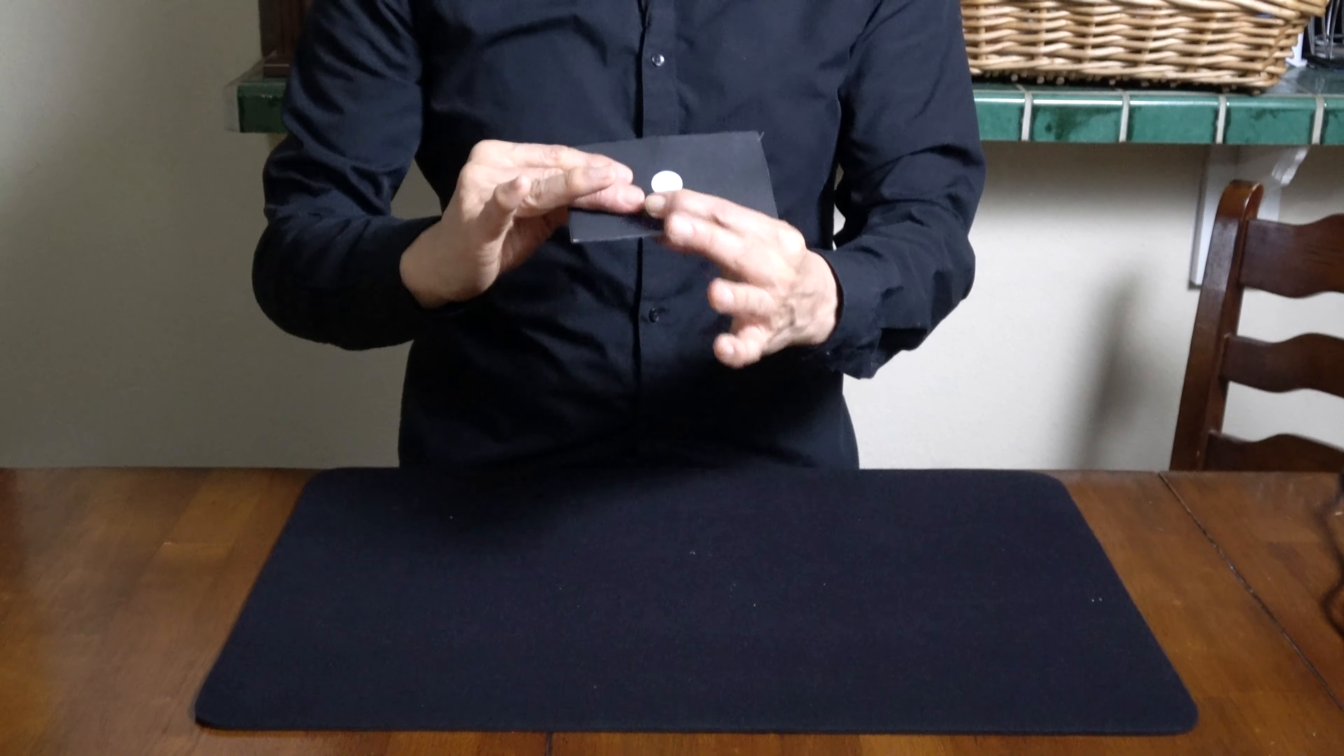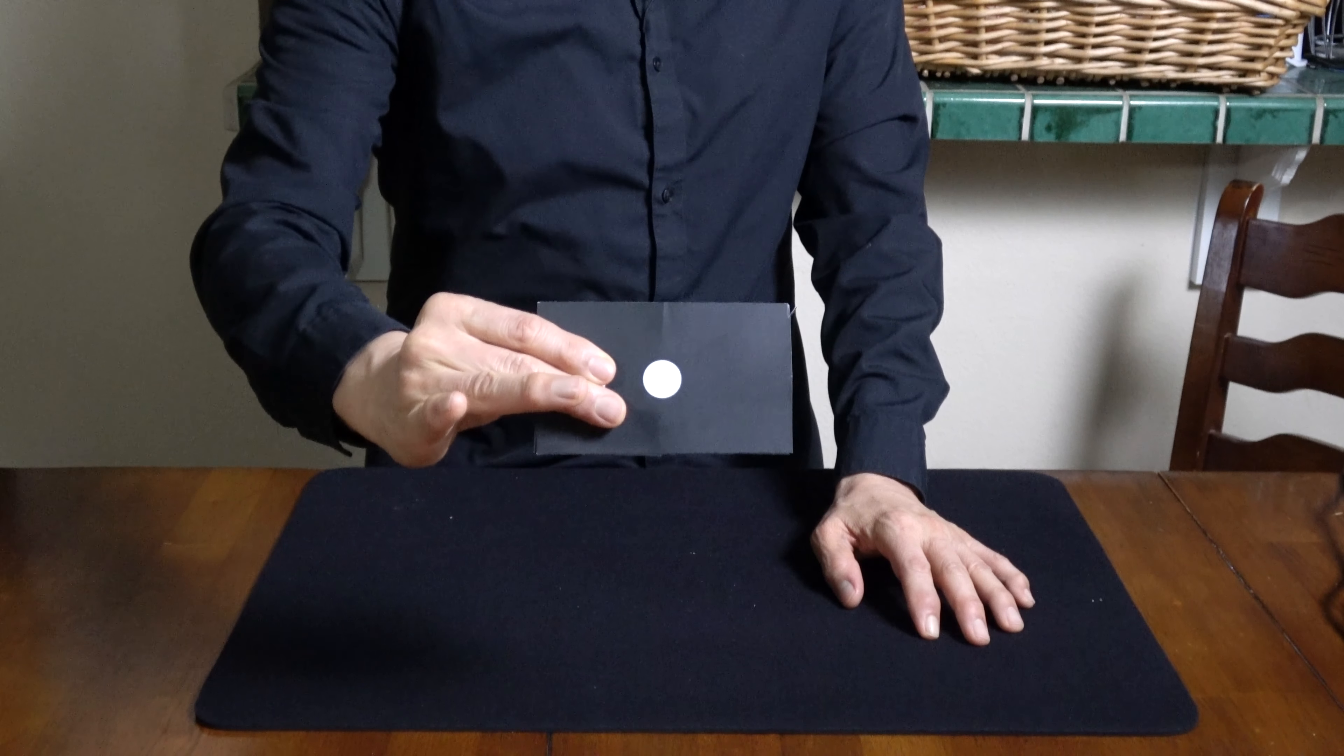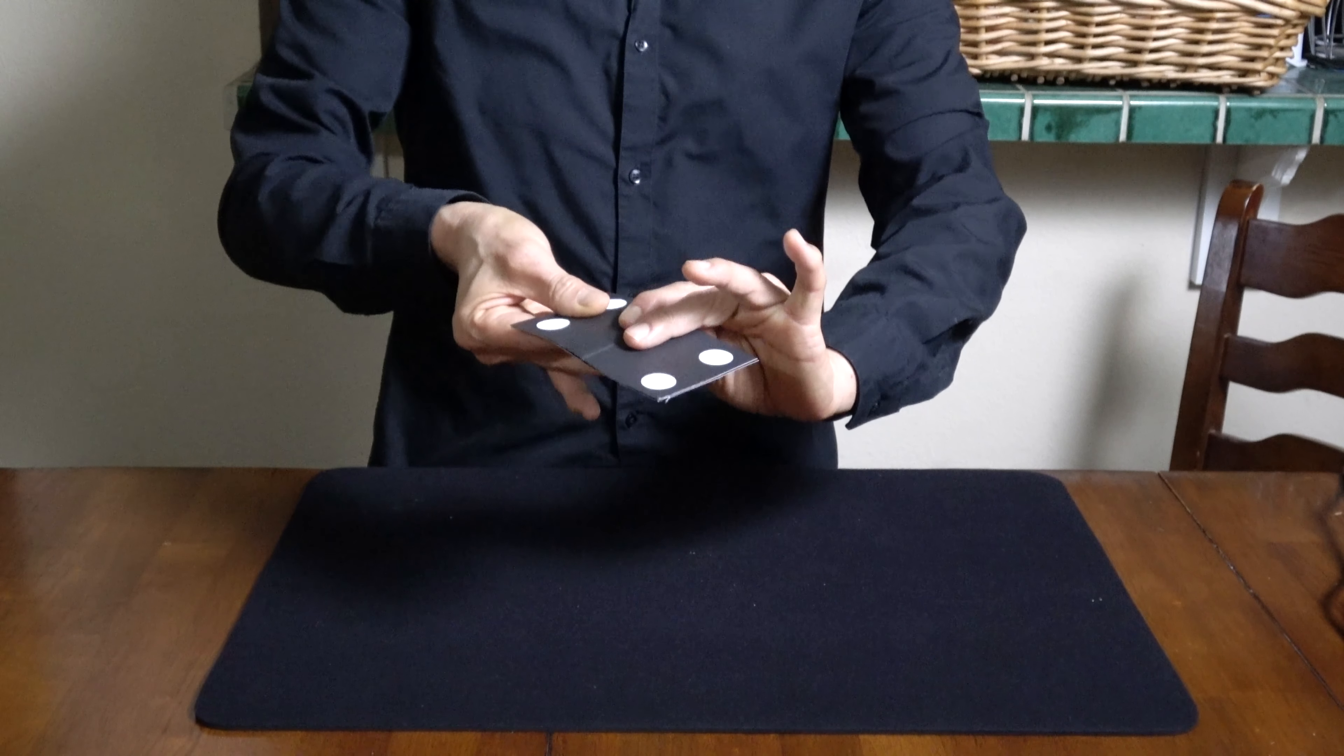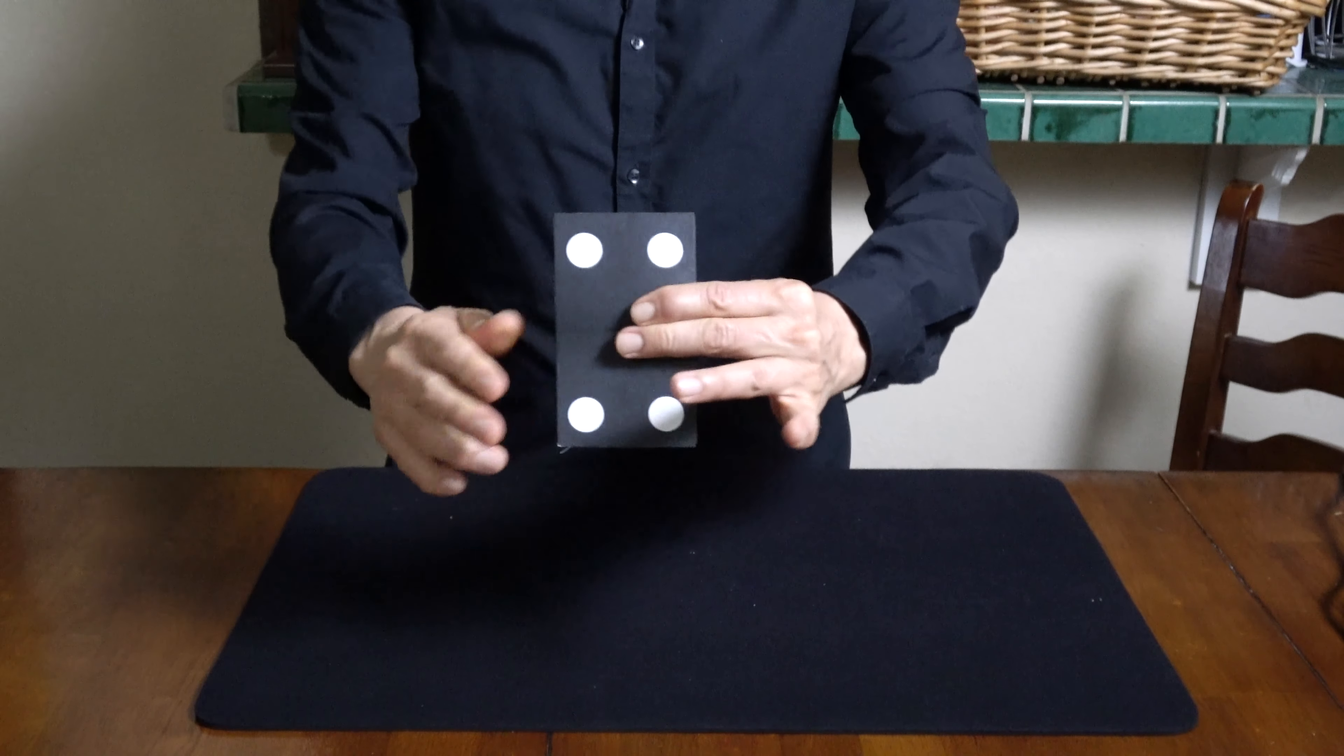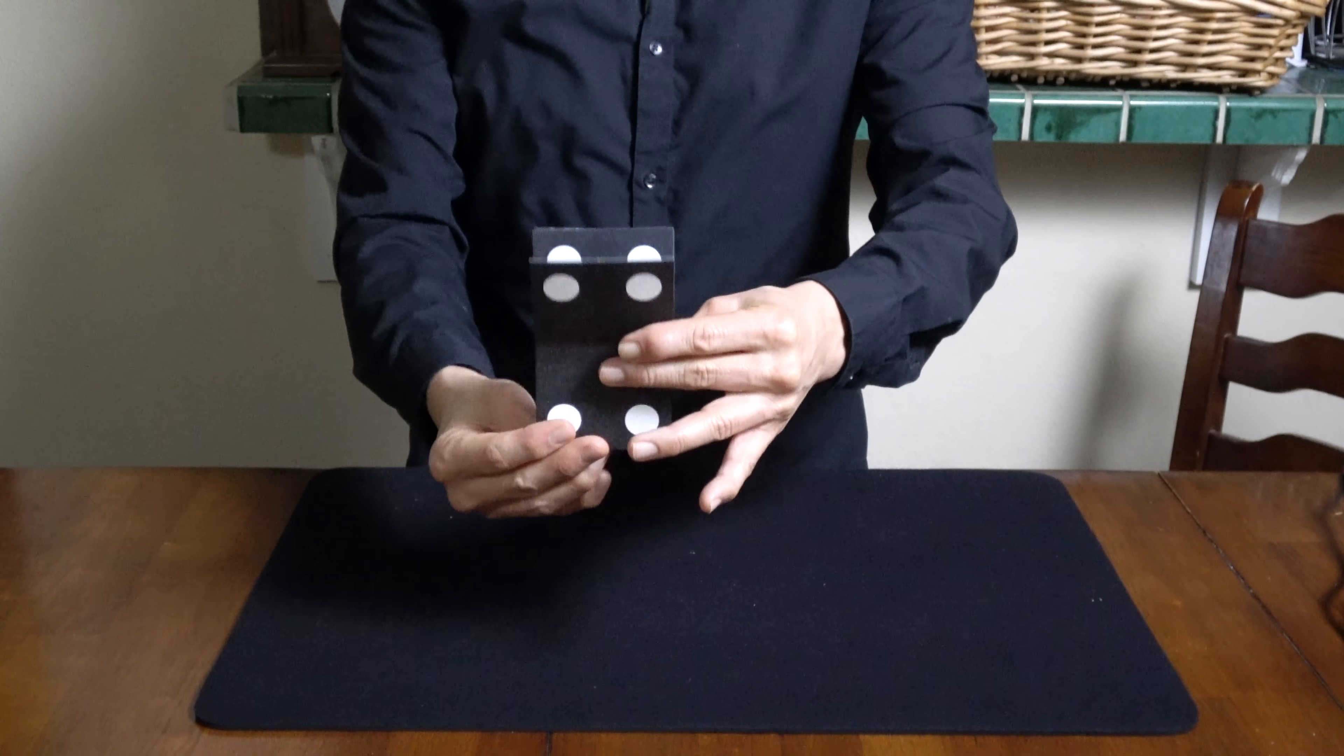Just some thoughts on handling this card because you have this flap here you have to be careful that you don't show the flap. So there's two ways to approach this. Number one is always make sure that you're holding this flap down with your other fingers. So for example here that's easy because my thumb is on the back and I'm holding it down.